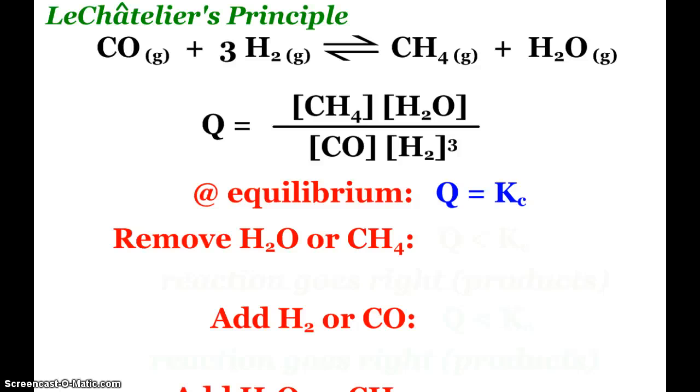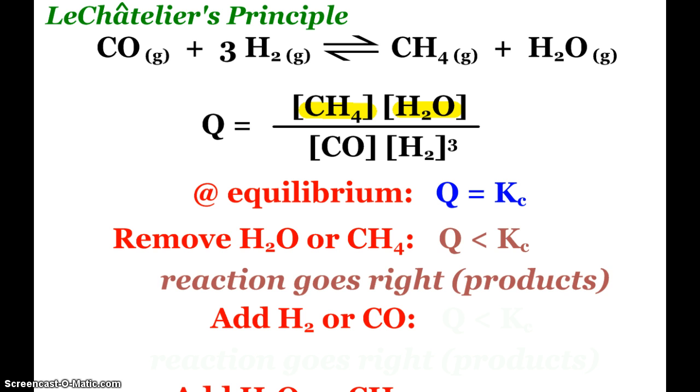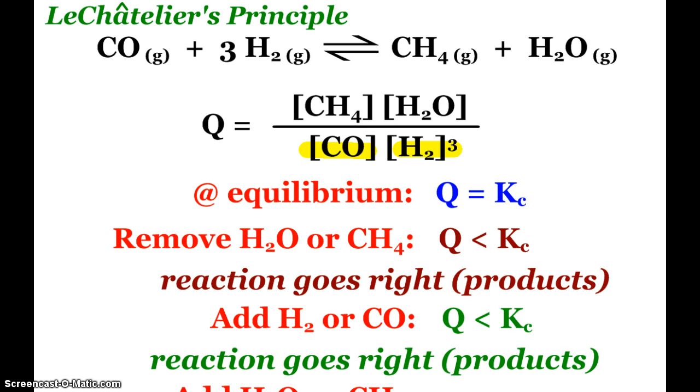But how does it tie into what we've been looking at with this Q and KC stuff? Well, at equilibrium, our Q expression, our Q numerical value, is equal to the equilibrium constant. Here we see our Q expression for my methanation reaction. Now, if I were to remove water or the methane, then those concentrations would go down and my Q would go down. And we know that when Q is smaller than KC, the reaction is going to shift to the right towards the products. Same thing. If I add hydrogen or carbon monoxide, then mathematically, when that denominator gets bigger, the Q is also going to get smaller.